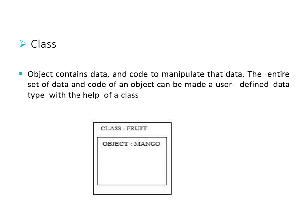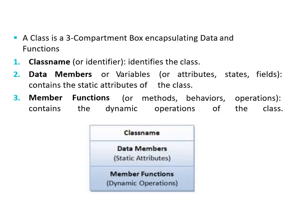Class contains data and code to manipulate that data. The entire set of data and code of an object can be made into a user-defined data type with the help of a class. A class contains the combination of data members and member functions in one unit. The class name is a user-defined keyword used to name the class. Inside the class there are two members: data members, which contain variables of a class, and member functions, which contain the operations on the data members.